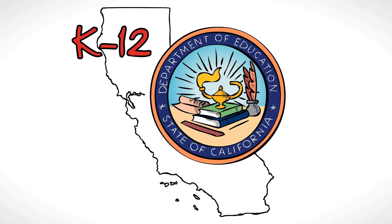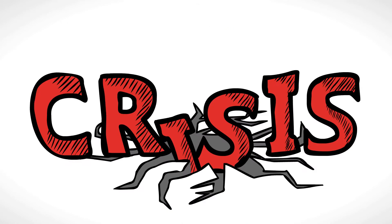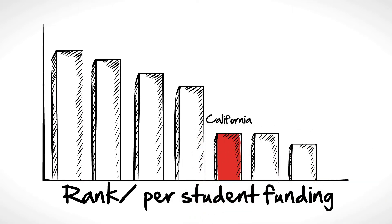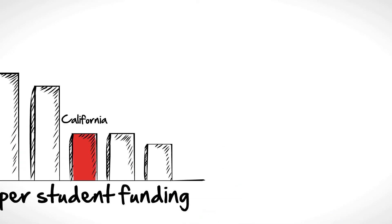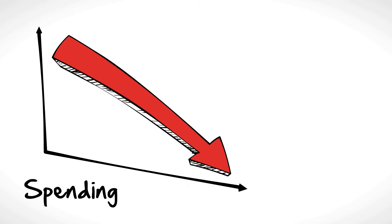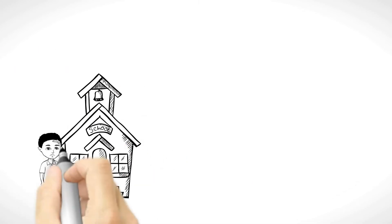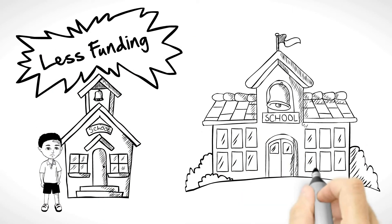K-12 education in California is in crisis. Not only does California rank near the bottom in per-student funding, and spending has been drastically cut, but students in low-income schools receive less funding than kids in well-to-do neighborhoods.